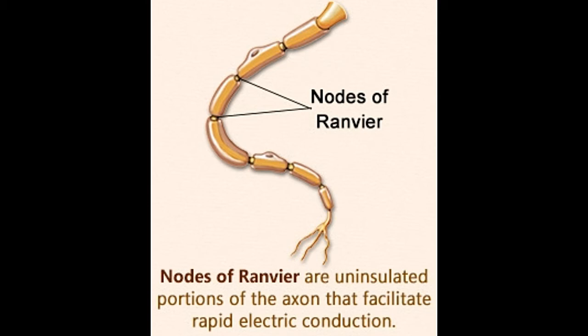The nodes or gaps between myelin sheets were discovered by the French anatomist and pathologist Louis-Antoine Ranvier. Neurons are the most fundamental units of the nervous system. They connect the brain and spinal cord to every organ and muscle fiber in the body. Neurons constitute our body's response mechanism.